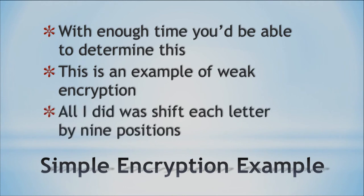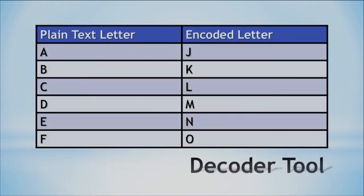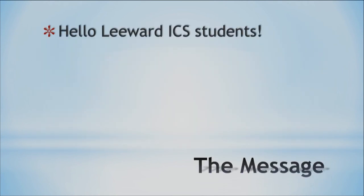What I did was shift each letter by nine positions. I have a table where you can see that the letter A encoded becomes the letter J. So if we went back to that message, anytime we see a J, we would replace it with an A. Using this tool and continuing out the alphabet, you'd be able to figure out the message, which says: Hello, Leeward ICS students. So there's an example of encryption — at first we couldn't see what the message said, but we decrypted it using the decoder tool and algorithm. My algorithm was a very simple one shifting everything by nine positions. That's an example of weak encryption, but hopefully it helps you understand why we like encryption and ways of protecting our network. Thanks and we'll see you next time.